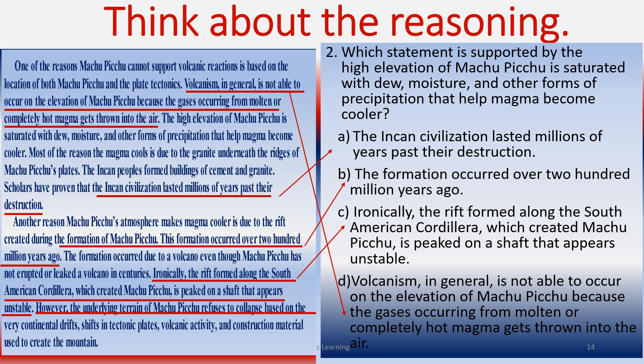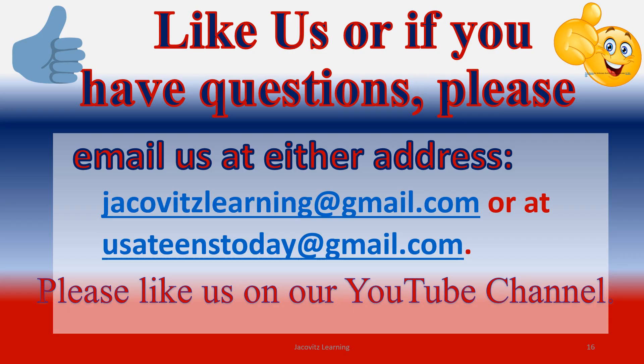Choice D: 'Volcanism in general is not able to occur on the elevation of Machu Picchu because the gases occurring from molten, completely hot magma get thrown into the air.' Look at the passage — the high elevation of Machu Picchu is saturated with dew, moisture, and other forms of precipitation that help magma become cooler, and the explanation for it is choice D, underlined right there. You're reasoning backwards. That's what the SAT is — a bunch of words put together to sound more complicated than they really are. There's your answer.